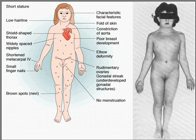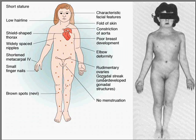Here's a classical Turner syndrome. You can see the webbing of the neck, often edema of the dorsum of the hand, and congenital heart defects. No pubic hair. They are all infertile, and they don't have true ovaries — they just have streaks.